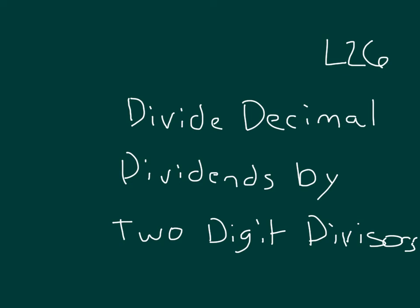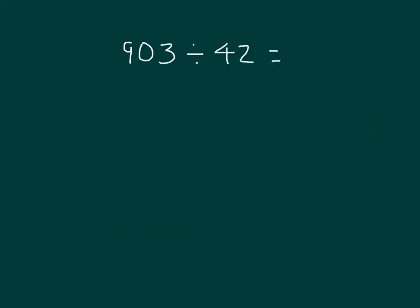In this lesson, our objective is to divide decimal dividends by two-digit divisors. Here I have the problem, 903 divided by 42. I'm dividing, my holes are 903, that's my dividend, and I'm dividing by 42.